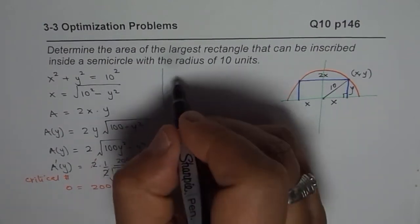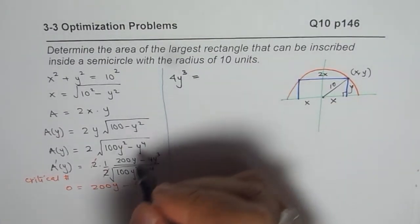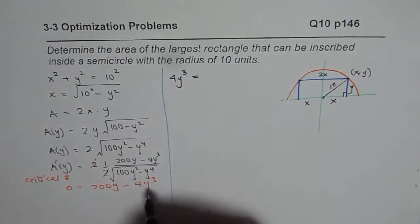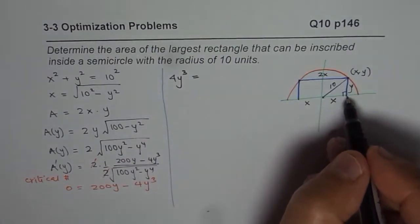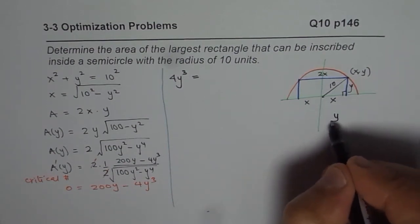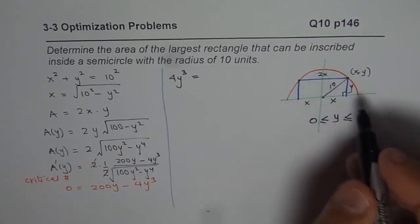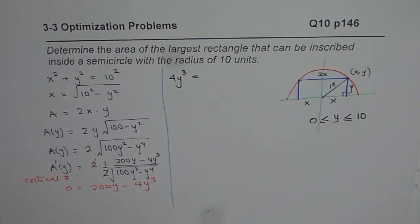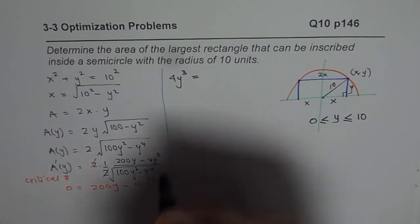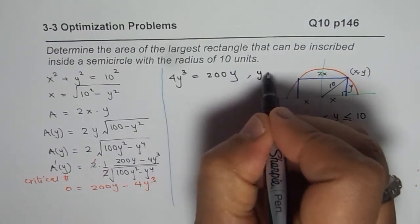So 4y cubed should be equals to 200. Now we can take 4y cubed common also and solve. So y could be equal to 0. So one solution is y could be 0. That is also the extreme value. So what we can do here is we can also write y should be greater than or equal to 0 and is less than or equal to 10. So that is the boundary conditions for y, which will help us to check for absolute maximum.